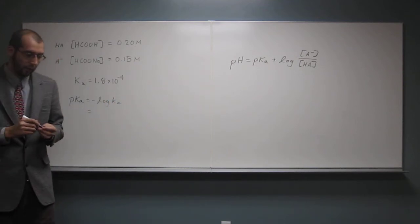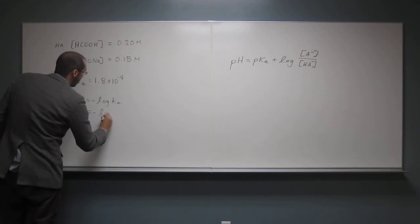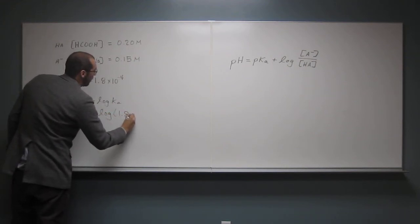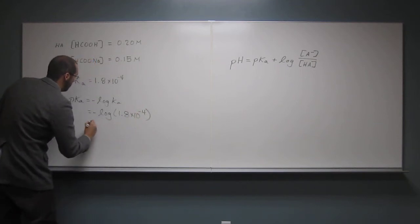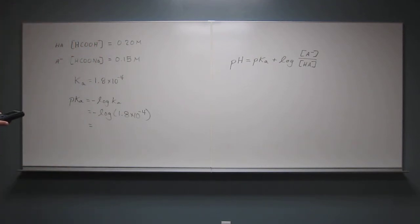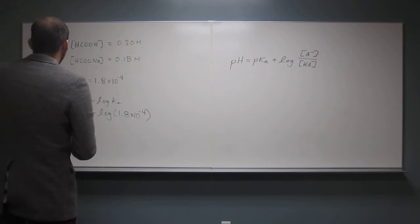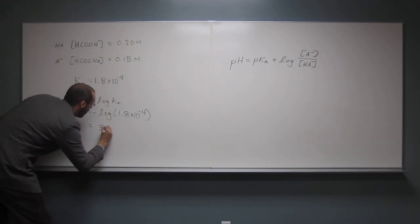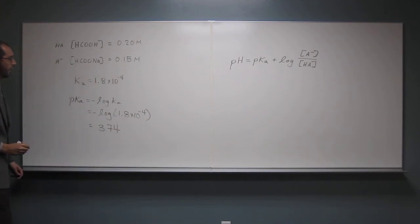So let's figure out what that is. So it's going to be negative log of 1.8 times 10 to the negative 4. So this should be like 3.7, yeah, 3.74. Like that, okay?